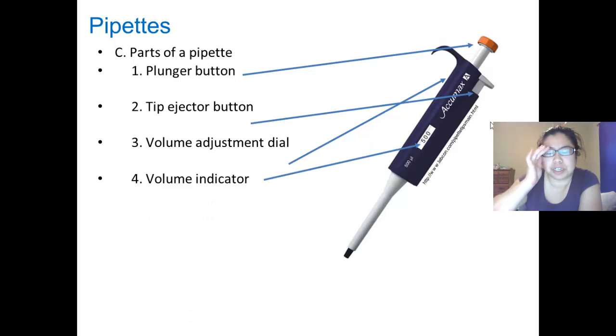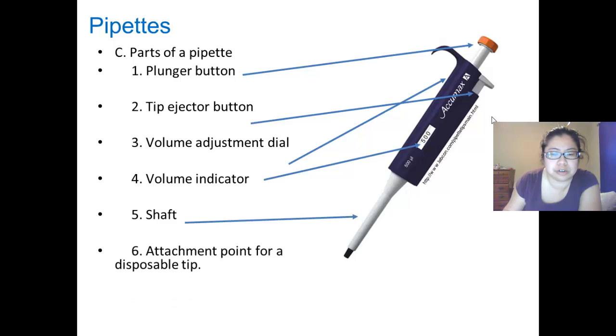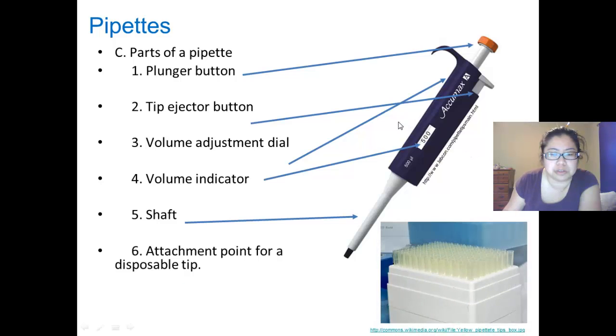Then we have a volume indicator that tells you how much liquid you want. And then there's the shaft where it delivers the air and vacuum, and the detachment point for the disposable tip here. And there's the box of tips.